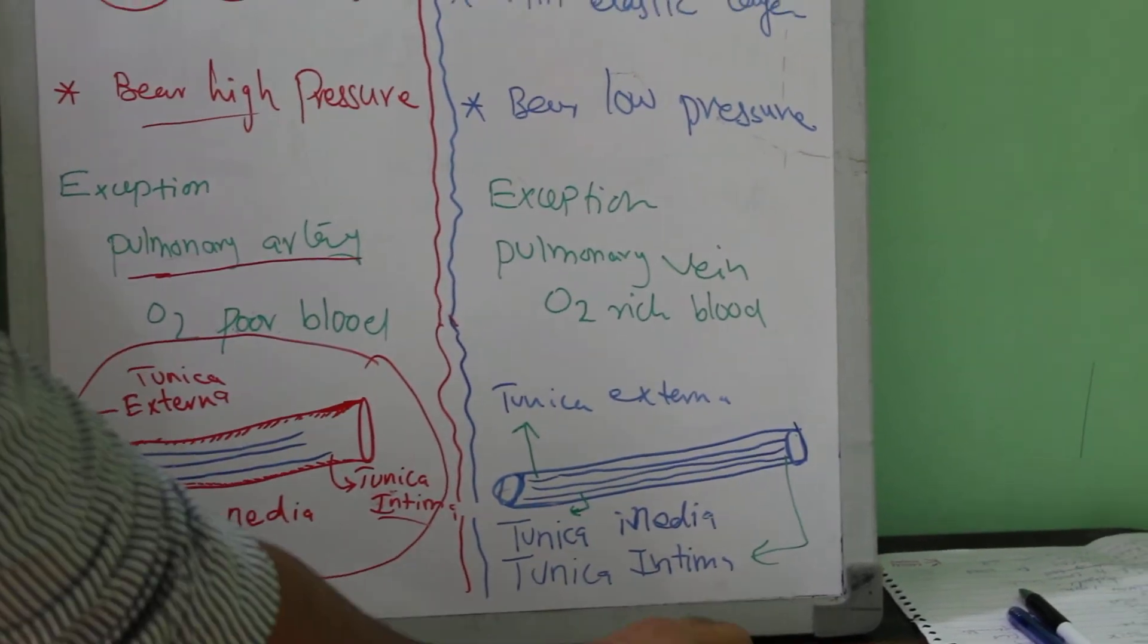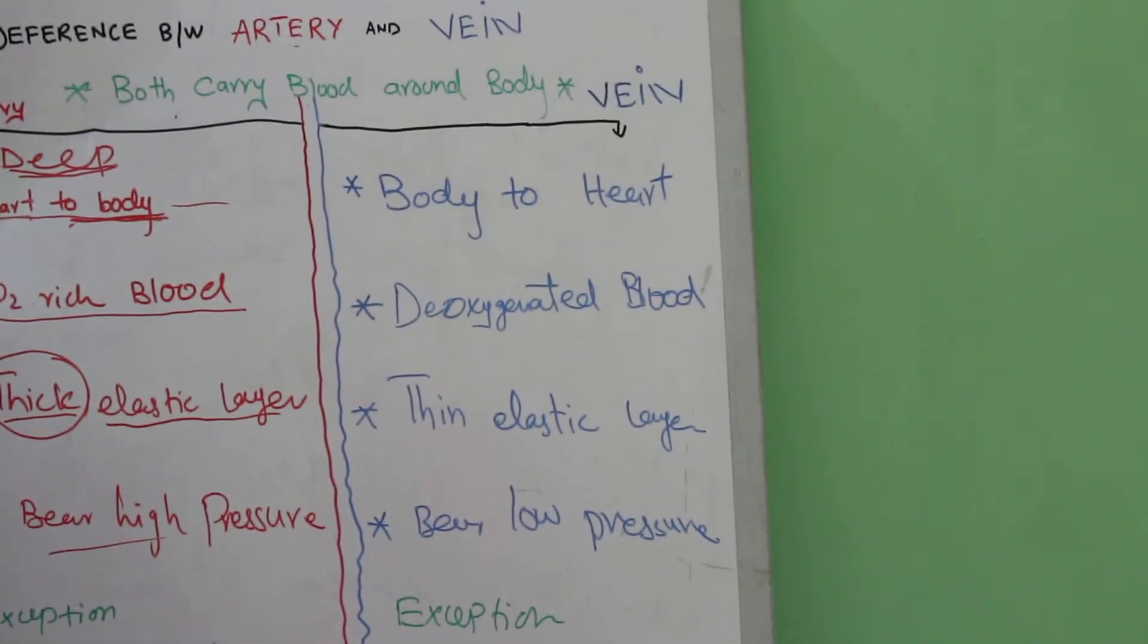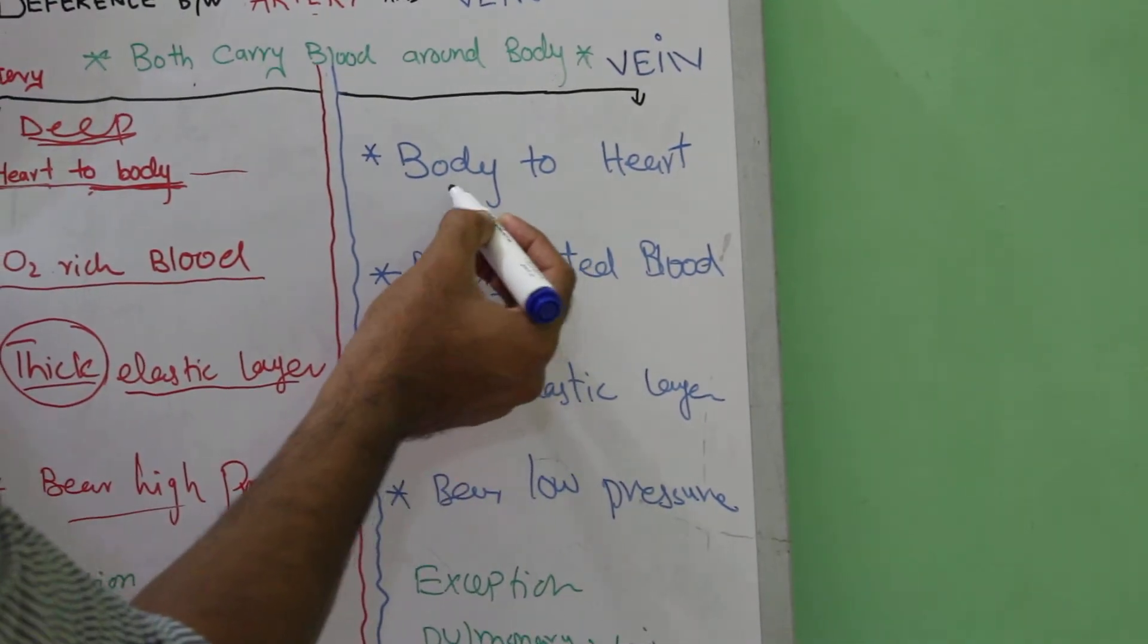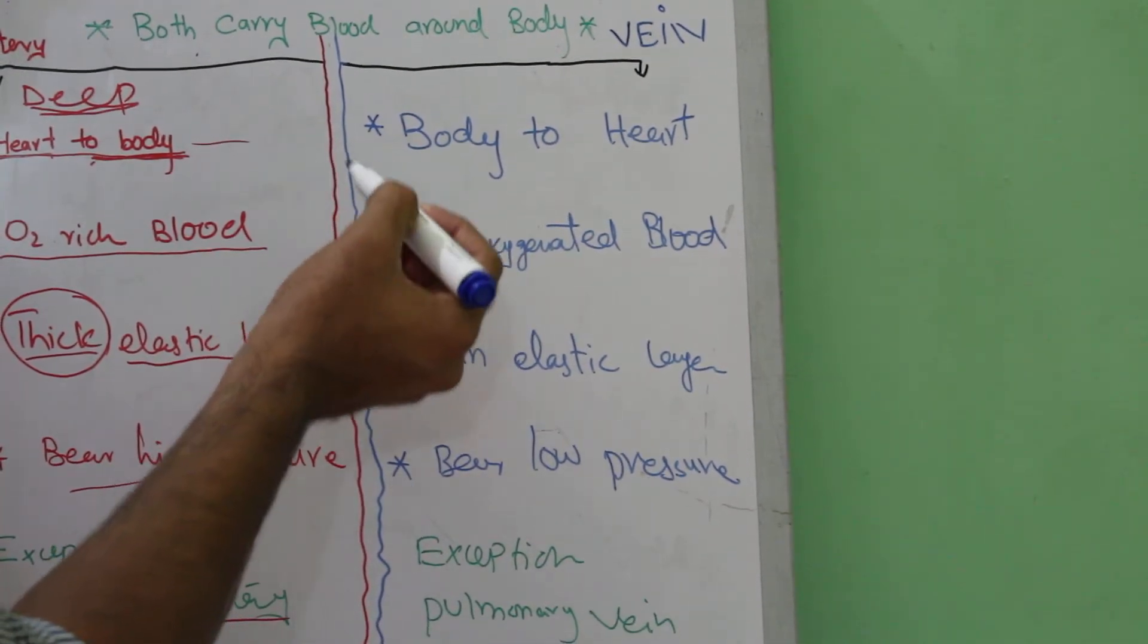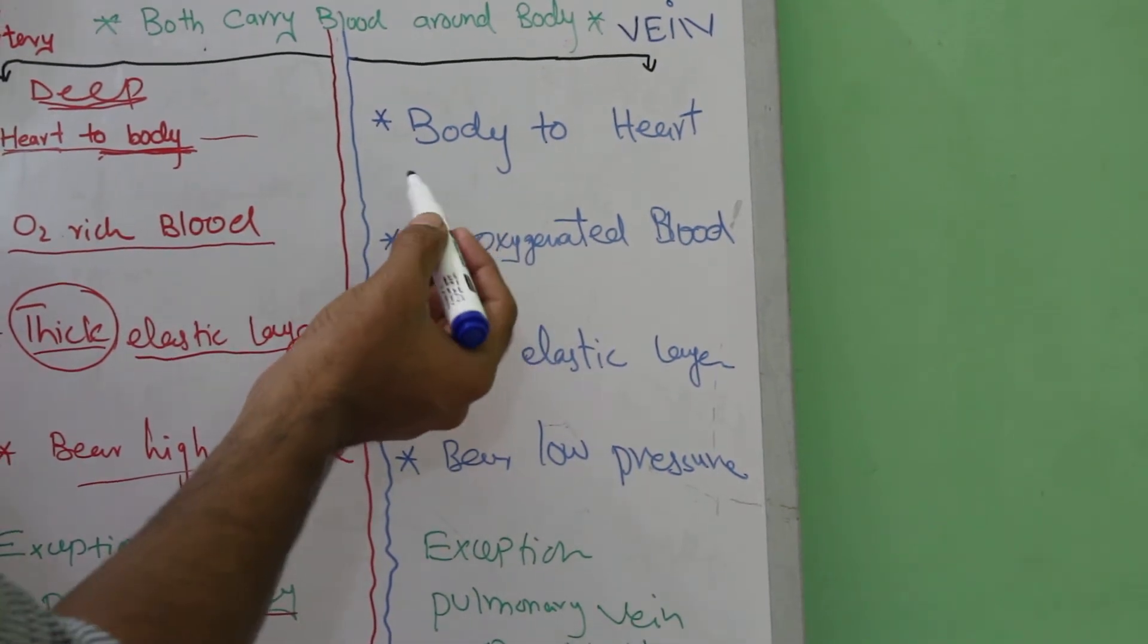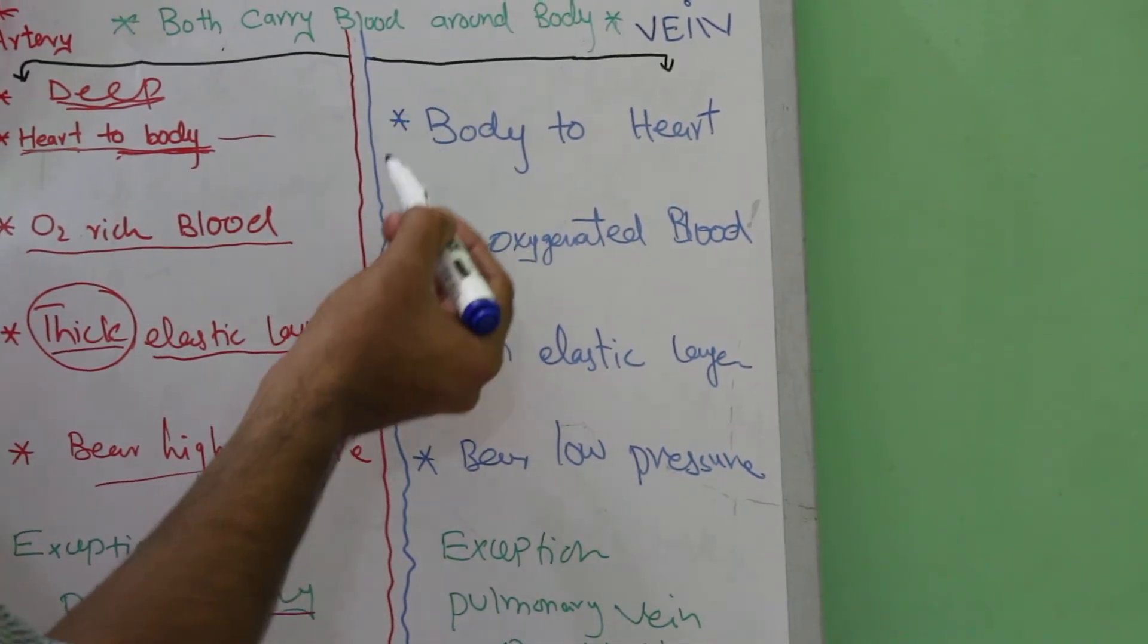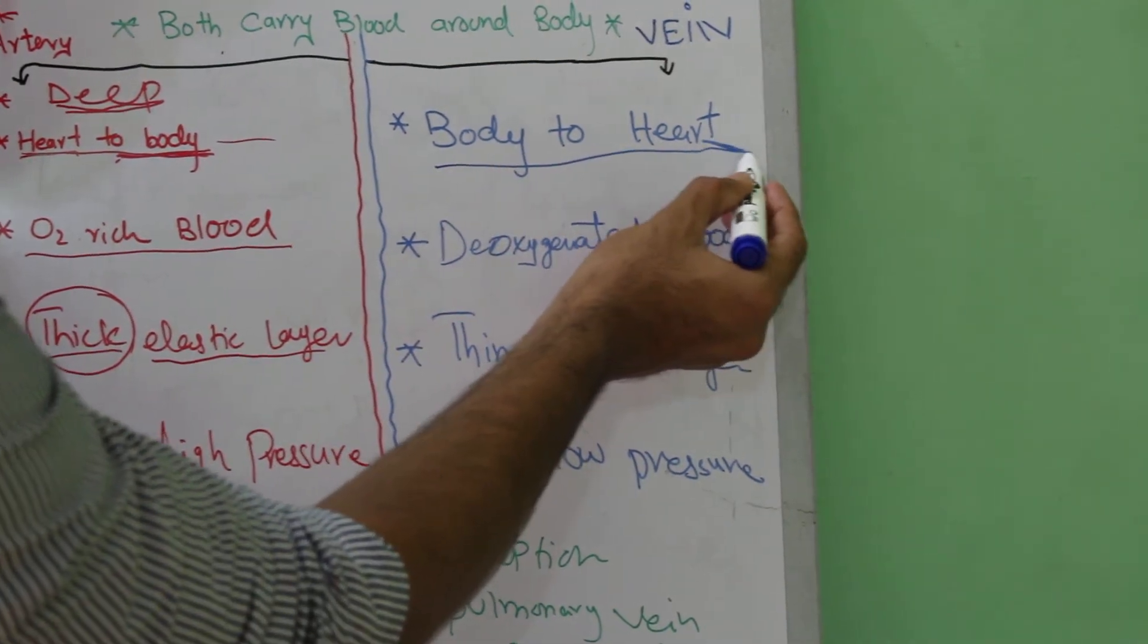The veins transport blood from the periphery to the heart. The veins are located away from the heart. They take the blood to the heart. For example, whenever you are sick and they insert an injection in your hand, that blood comes from the body towards the heart. This is the direction of blood flow in veins.